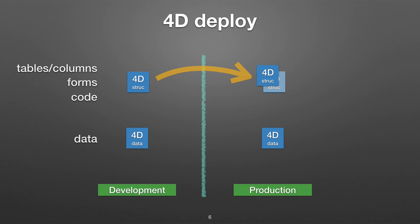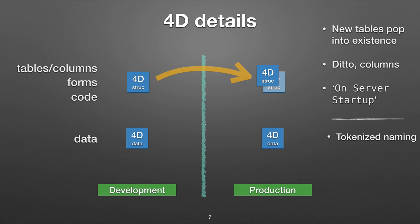In 4D, the way it works is that you have two files: a data file with all your data, and a structure file that had your forms, all your code in their own proprietary language, and your tables. Because these were two different files, when you were making changes in your code, you could deploy just the structure file. Every time you had a fresh release of your software, you just moved your structure file over. It automatically detected that you'd defined a new table or added a new column, and it would automatically update the data file. There was also an on-server startup hook where you could record what version you had in your data file and do code to update — maybe massage your data for a release.